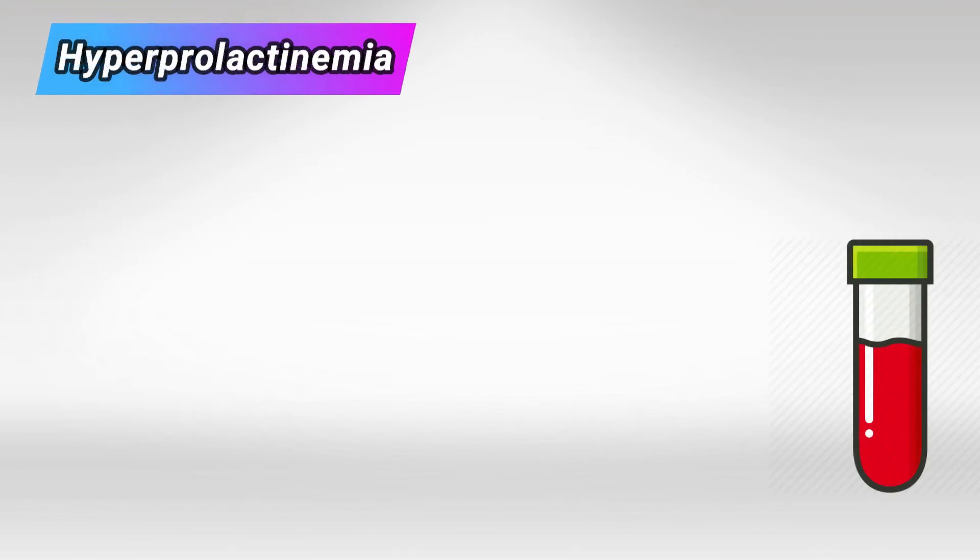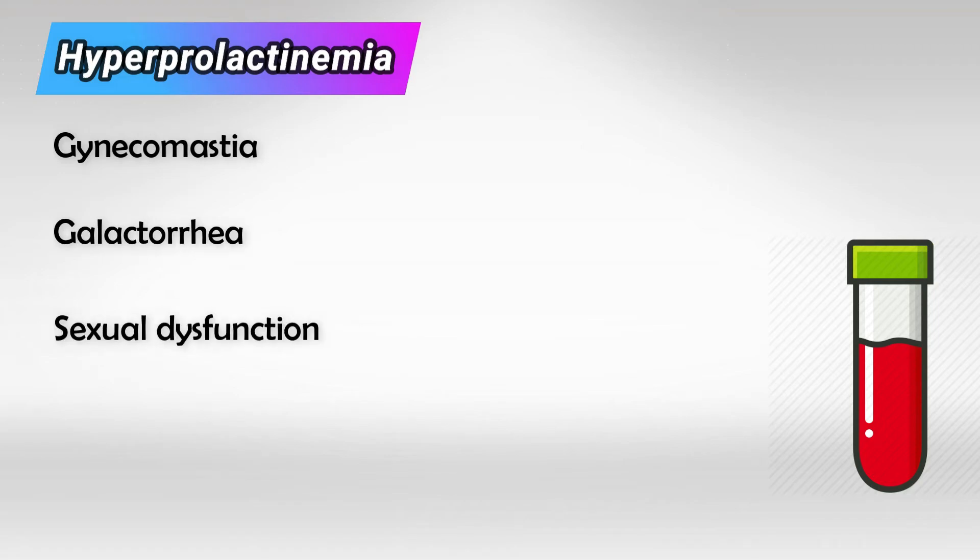One of the most common side effects is hyperprolactinemia, which is the effect of dopamine inhibition. This presents as gynecomastia and galactorrhea and it can also cause sexual dysfunction and sometimes infertility which is irreversible.